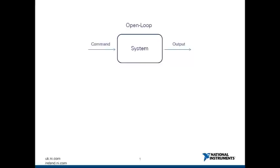There are two main types of control systems, open loop and closed loop. An open loop system is one that doesn't incorporate feedback and therefore processes can often be affected by disturbances.